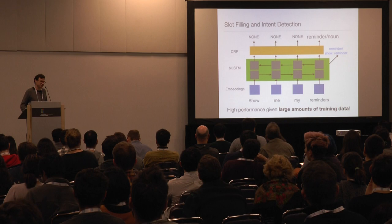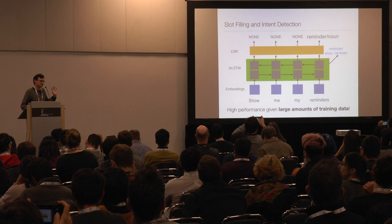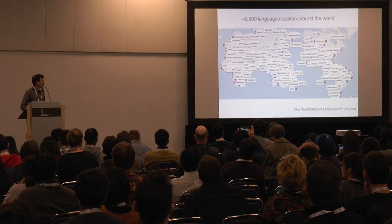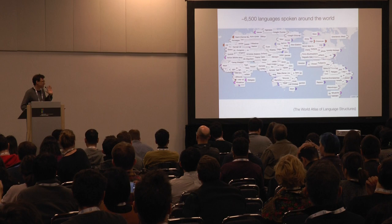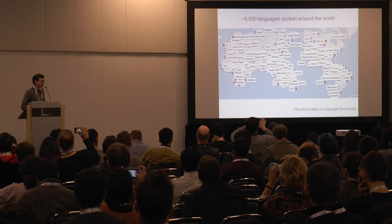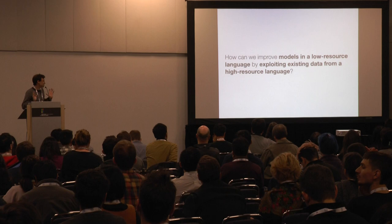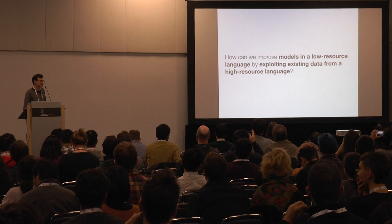These models work really well when you have large amounts of training data — often per domain that means several tens of thousands of utterances annotated with data. But at the same time, there are around 6,500 languages spoken around the world. So even if you just want to deploy these systems to 1% of these spoken languages, this would be very expensive and time-consuming. We were looking at how we can improve models in a low-resource language by exploiting data in an existing high-resource language.